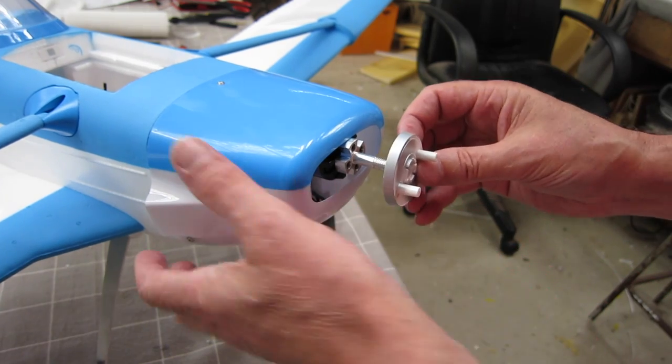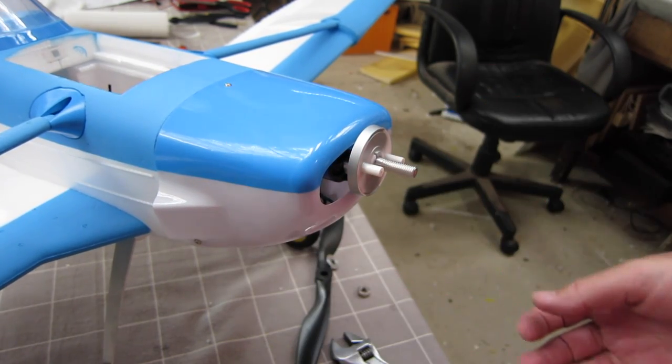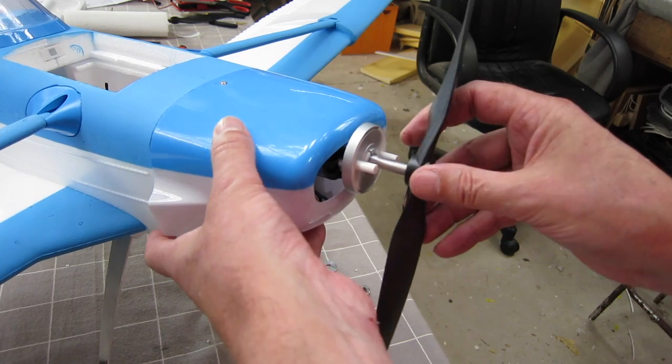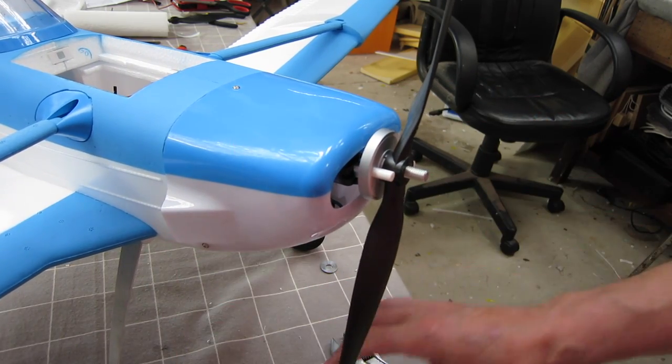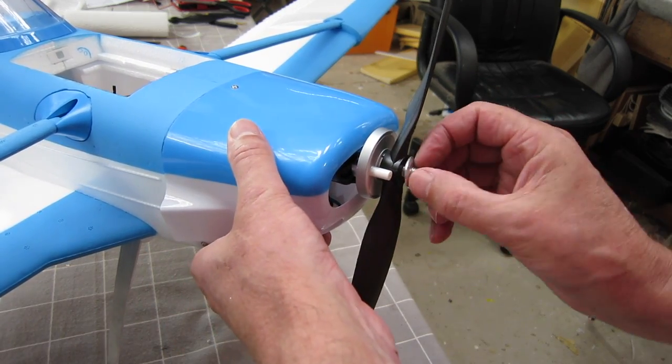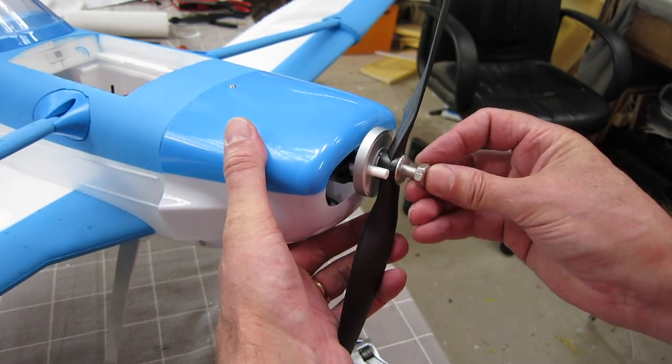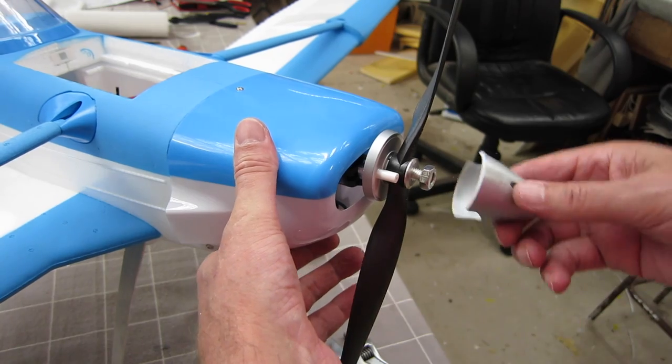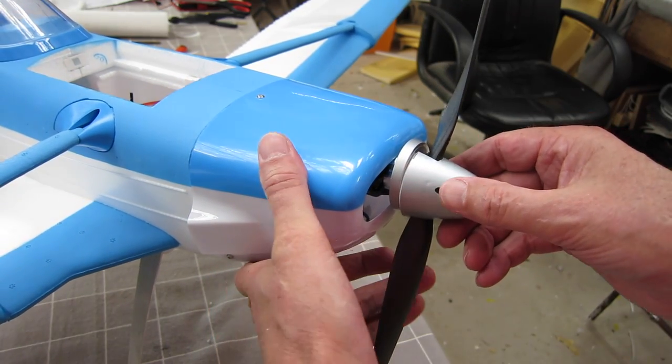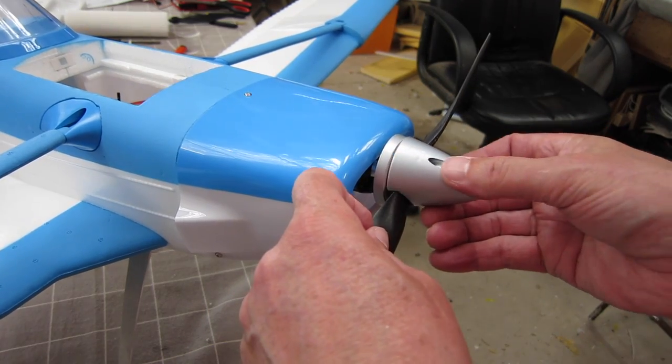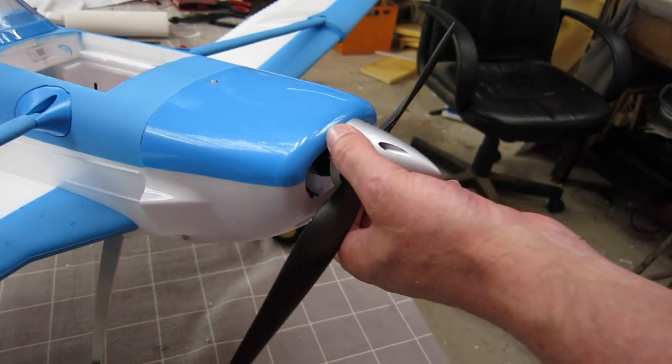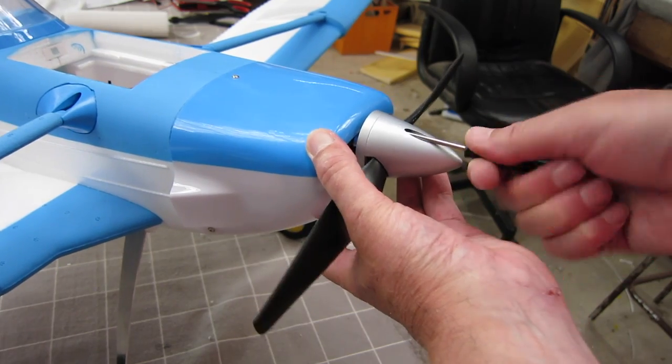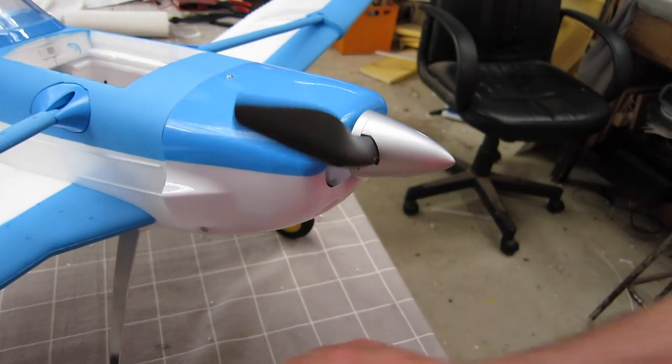Okay, fitting the prop now. We've got the spinner plate, then the prop goes on, numbers facing forward, washer, nut. See how that's going to go, to make sure the screws are going to line up with the position of the prop. Excellent.